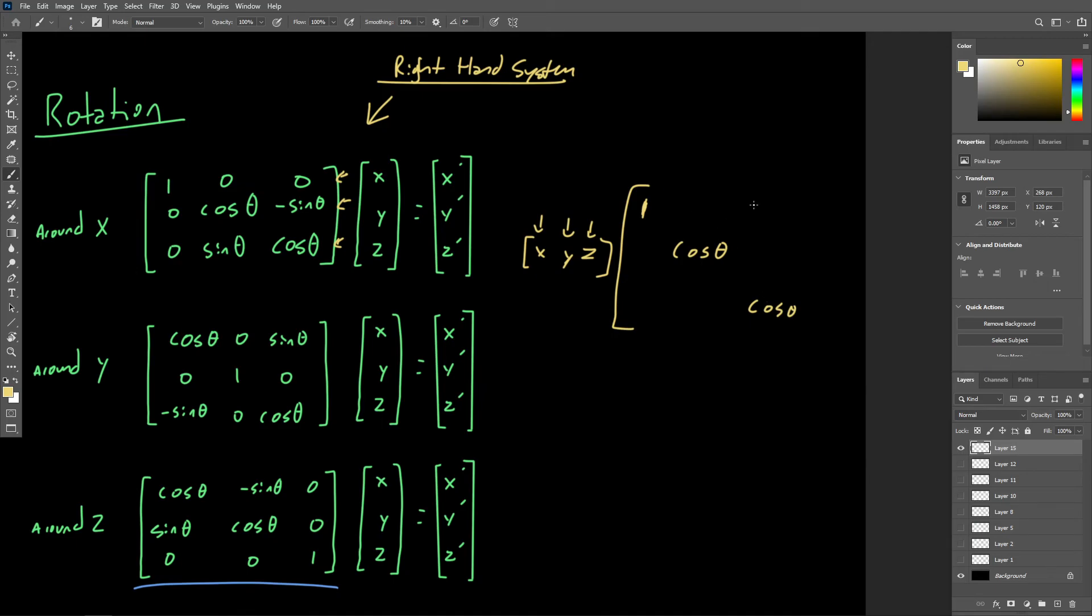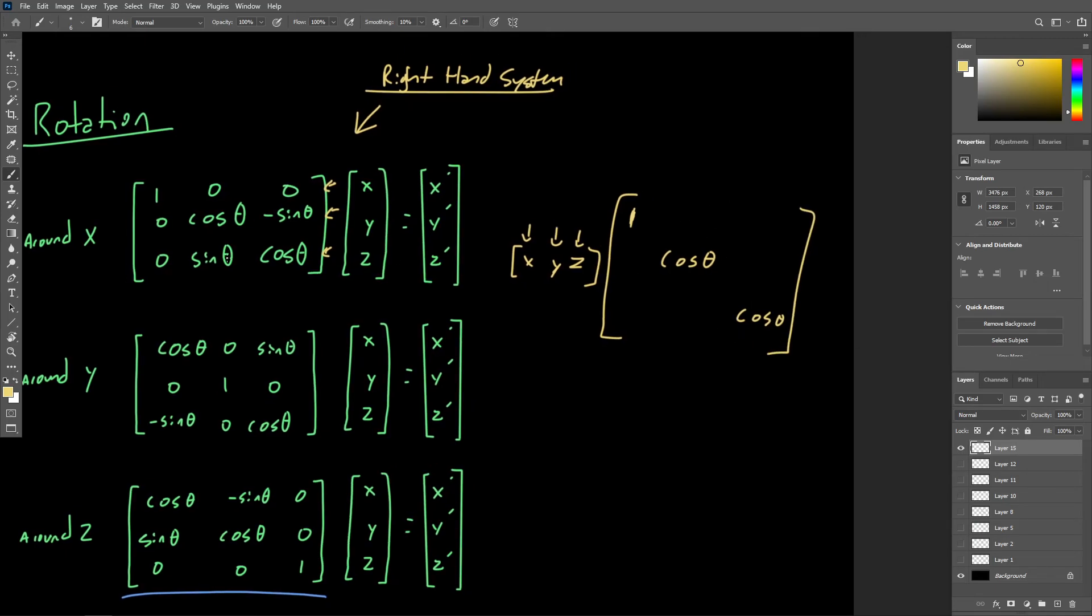So these elements on the diagonal will remain unchanged. However, we're going to see that the sine theta and negative sine theta do trade places just because of the transposition.